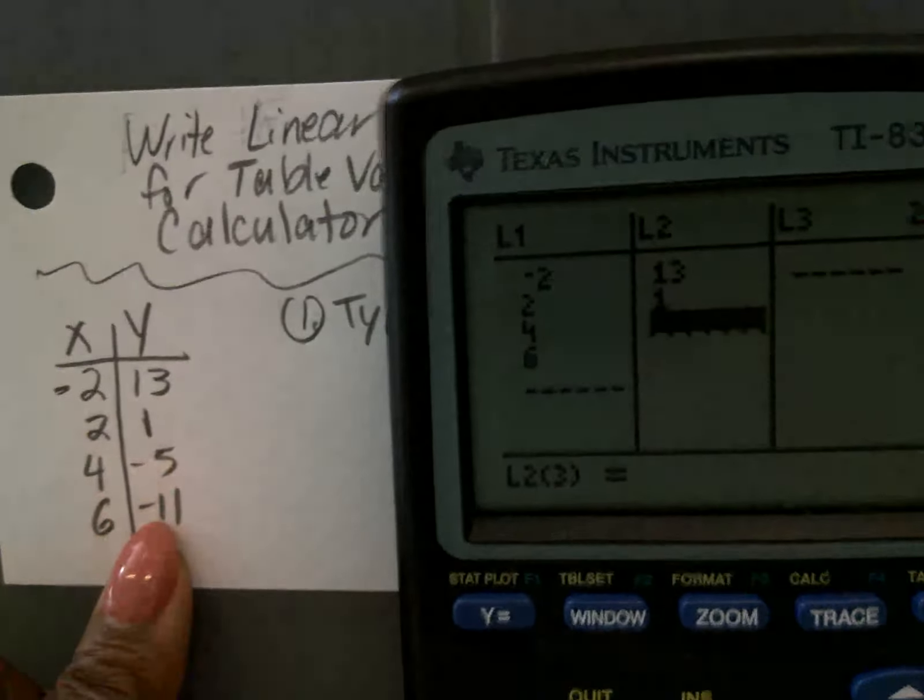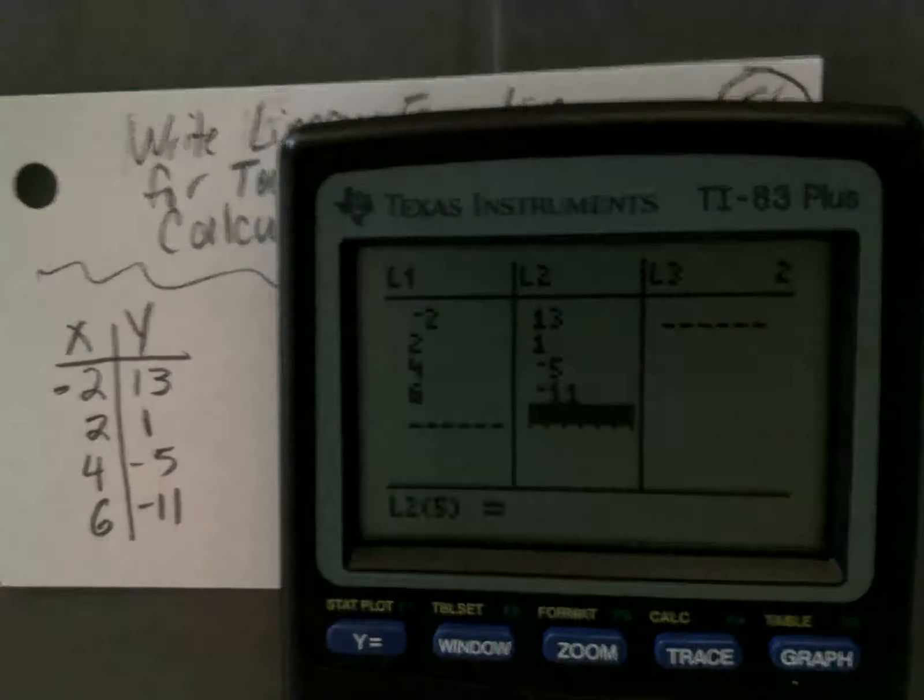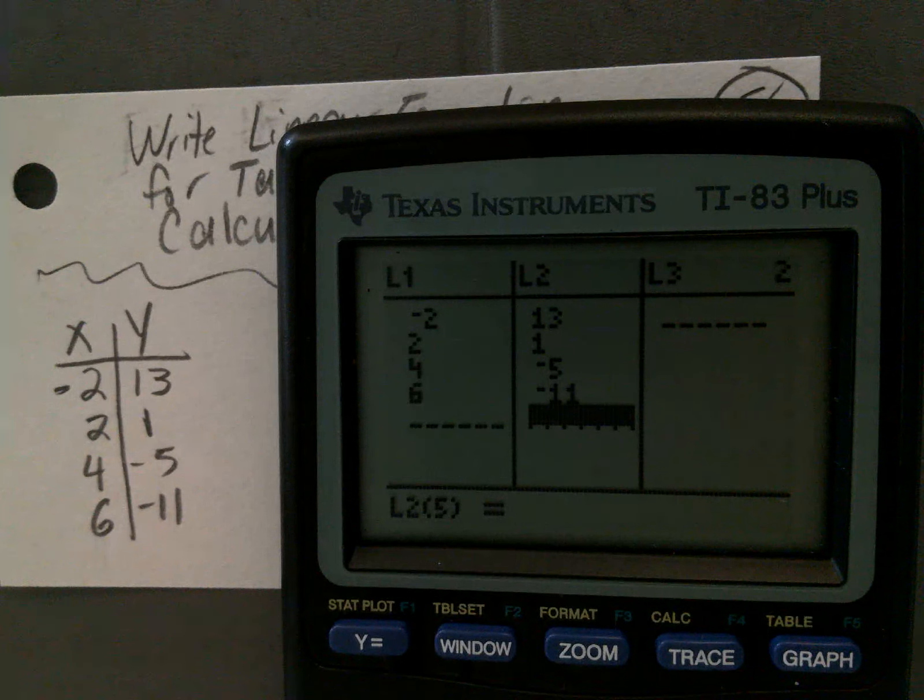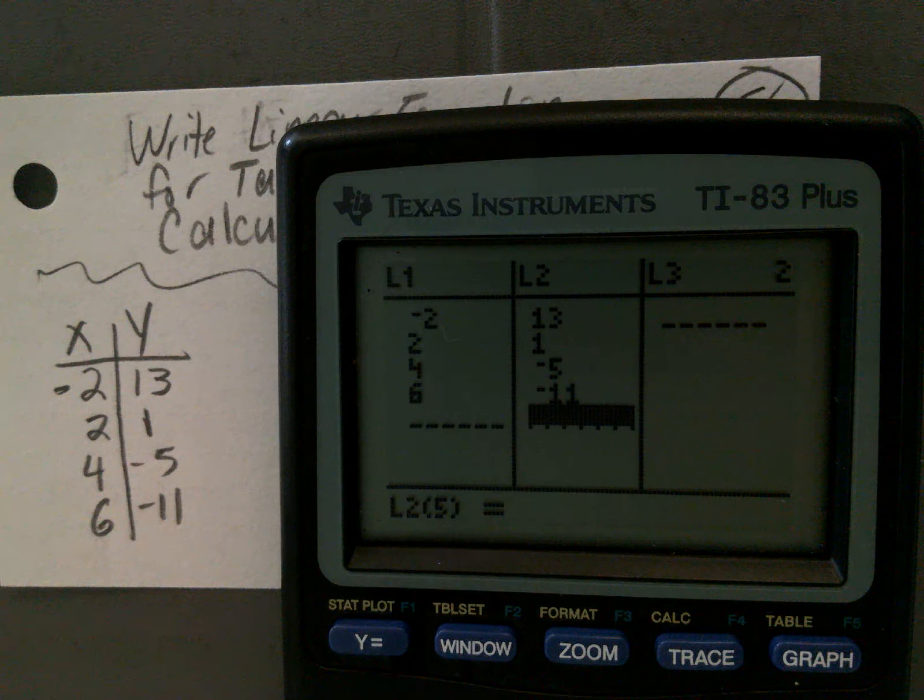Then I'm going to press the arrow over button to go to list two, where I'm going to type in my Y values. Thank you. All right, so I have 13, 1, negative 5, and negative 11. Okay?